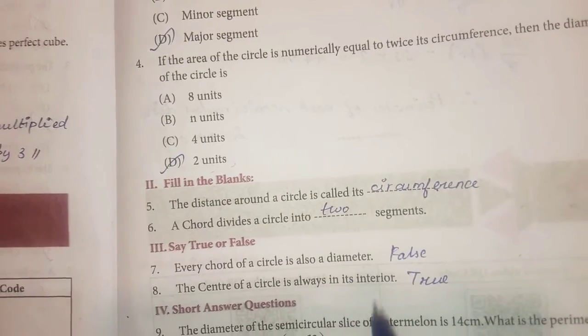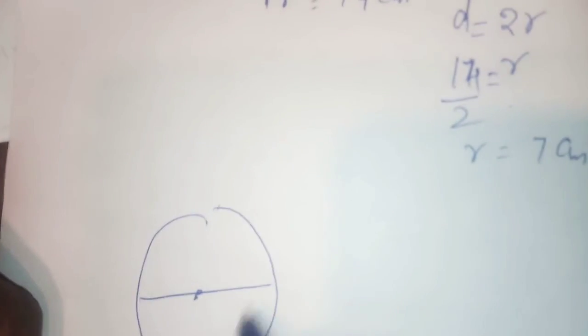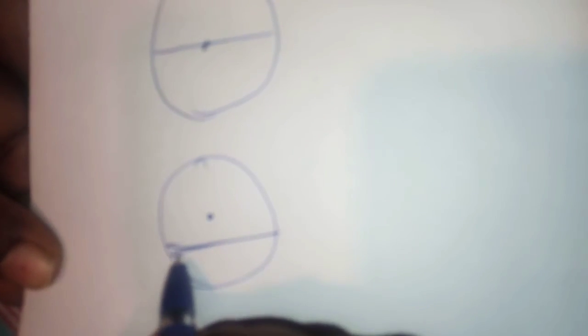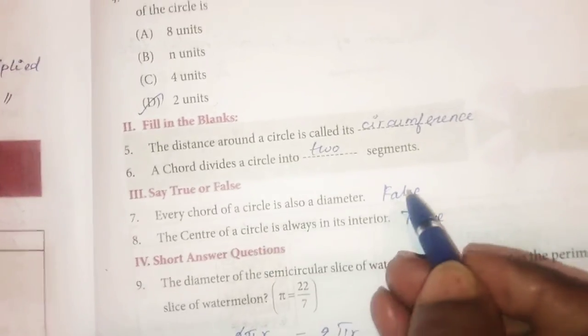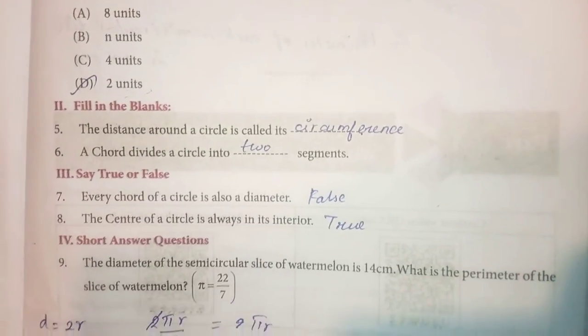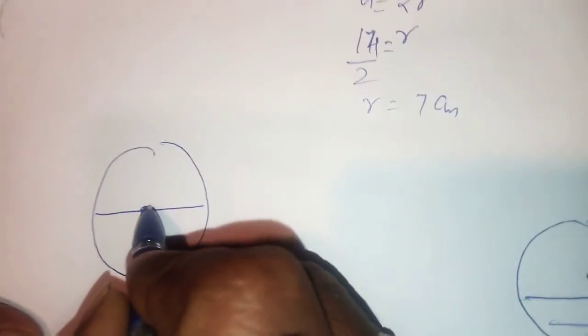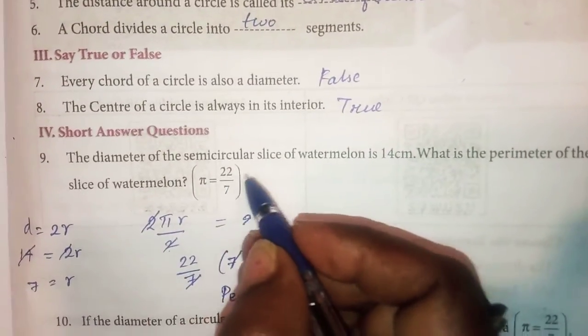Say true or false. Seventh question: Every chord of a circle is also a diameter. Every chord of a circle is not a diameter. Only a chord which passes through the center is called a diameter; otherwise it is called a chord. So the statement is false.